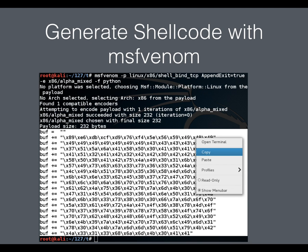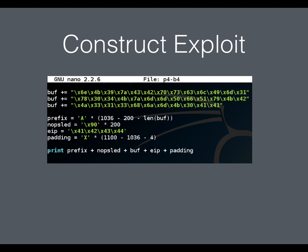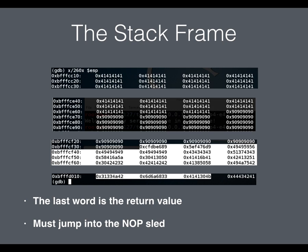If you can control the instruction pointer, you can redirect code execution to run injected code. The Shell Coder's Handbook teaches you to write shellcode in assembler — typically it phones home to a command-and-control server. But you can just use Metasploit: msfvenom will generate shellcode. The simplest payload opens a listening port to connect to. It's a weak attack because any server with a firewall blocks unused ports, but it's a starting point. Metasploit writes it in any language you want — for example, Python.